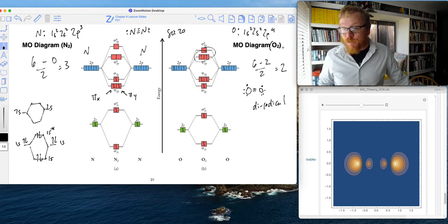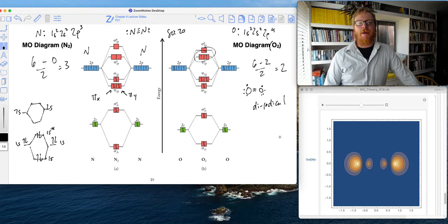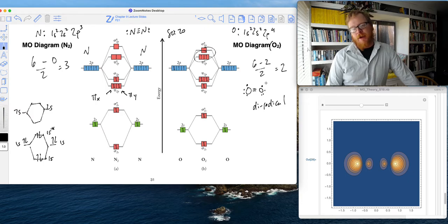We also know that oxygen, under certain conditions, can ignite via combustion. So oxygen is very reactive, and it's because it's a diradical.